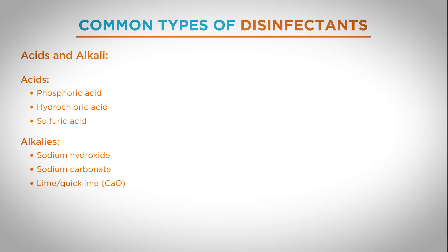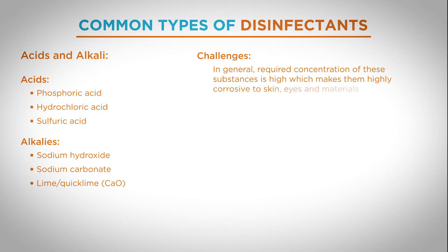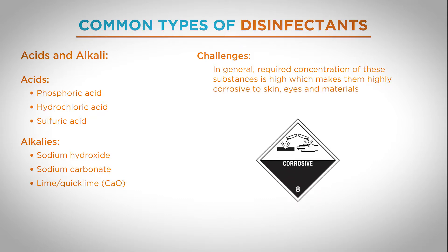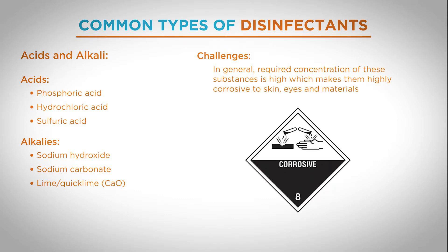These disinfectants have a modest broad spectrum of activity. They're good against non-envelope viruses, envelope viruses, and vegetative bacteria. The main problem with using acids or alkalis as disinfectants is their corrosivity. Because they deliver extreme pH — either very low or very high — they're highly corrosive to skin, eyes, and of course to materials.